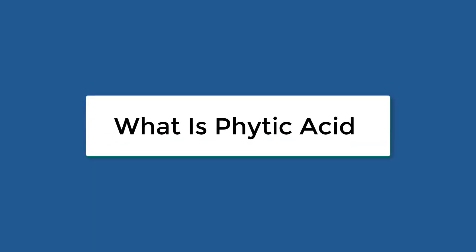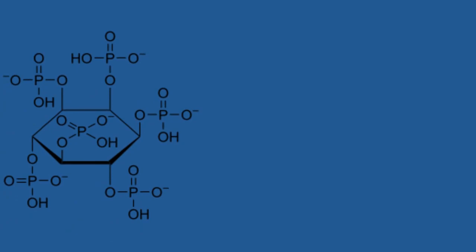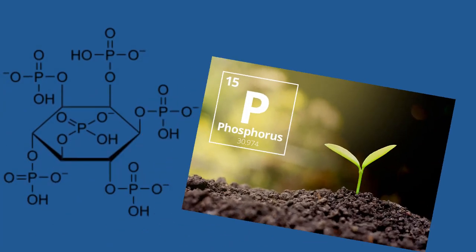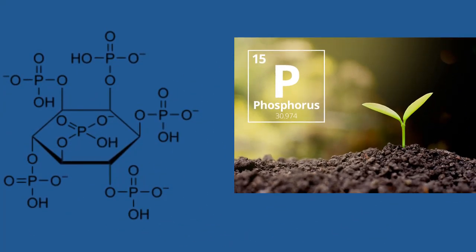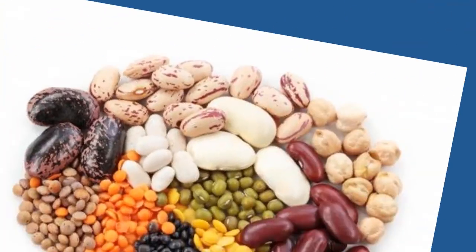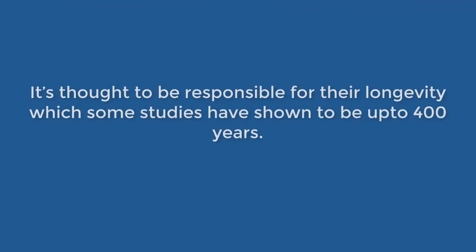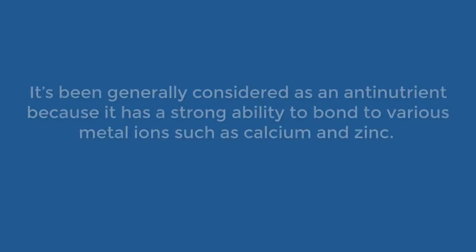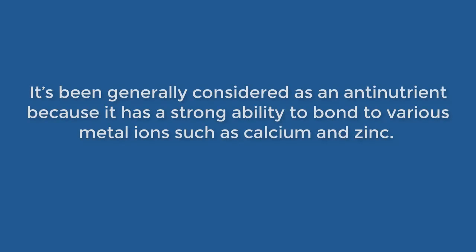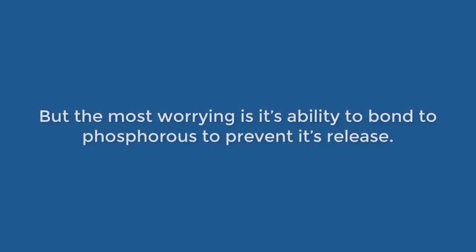What is phytic acid? Phytic acid is the principal storage form of phosphorus in most plant tissues, especially the bran portion of grains and other seeds. Nuts, seeds, beans, and tubers all contain phytic acid. It's thought to be responsible for their longevity, which some studies have shown to be up to 400 years. It's been generally considered an anti-nutrient because it has a strong ability to bond to various metal ions such as calcium and zinc. But the most worrying is its ability to bond to phosphorus to prevent its release.